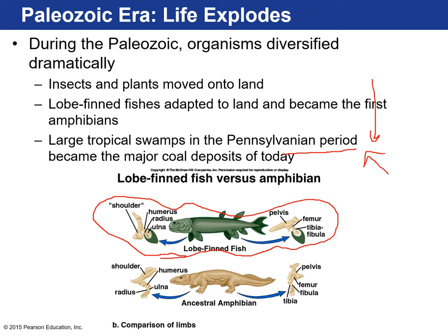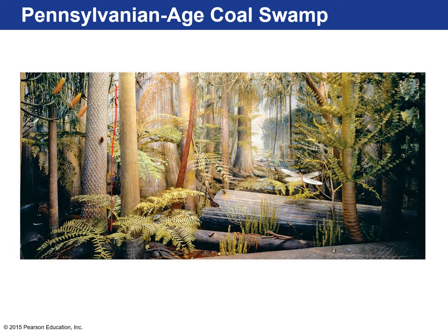A lot of fish reproduced by broadcast spawning — they'd shoot their eggs and sperm out into the water where they'd fertilize — but that made them easy prey with low success rates. Because there were no predators on land, it was advantageous for some fish to venture into really shallow swamps and lay their eggs on land, army-crawling out. More of their offspring were successful, and fish that could venture even further onto land passed on those traits. The lobe-finned fish eventually led to the very first ancestral amphibians, first showing up in the Pennsylvanian.